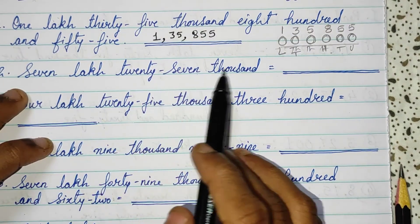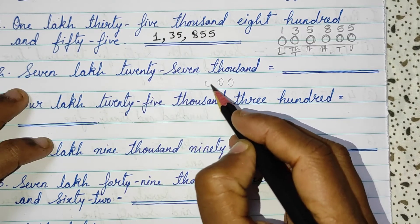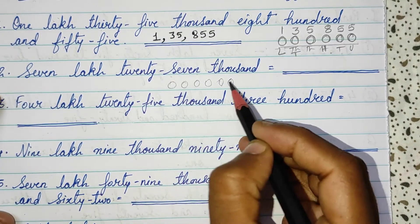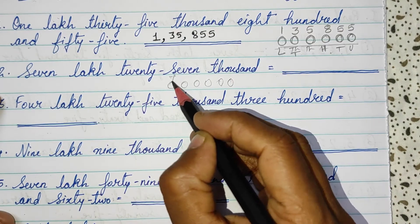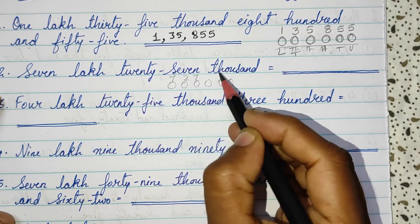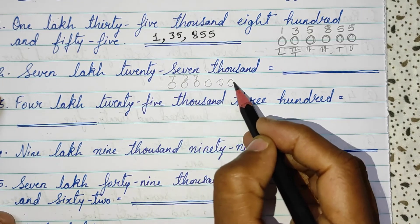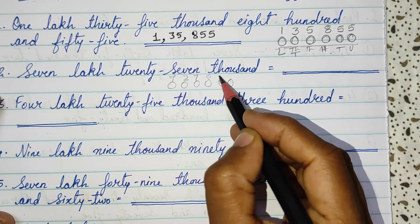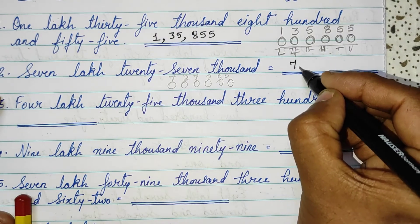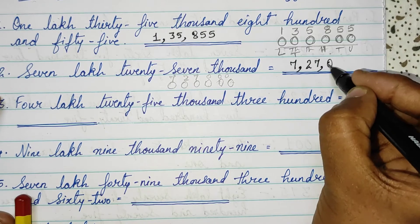Second sum: 7,27,000 — so 1, 2, 3, 4, 5, 6. This is lakh. 7,27,000, then 27,000. There is no number for the remaining three places, so they are 0. Your answer is 7,27,000.